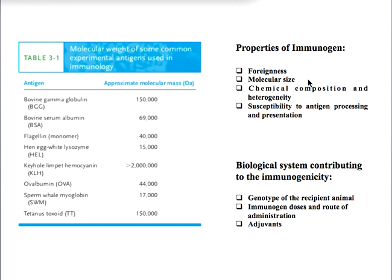The second property is molecular size. The greater the molecular size, the more immunogenic the molecule. A size of 100,000 daltons is very good for a molecule to serve as an immunogen, while a size of 5,000 to 10,000 daltons is considerably less immunogenic. Next is chemical composition and heterogeneity — a homopolymer serves as a poor immunogen compared to a chemically complex molecule.